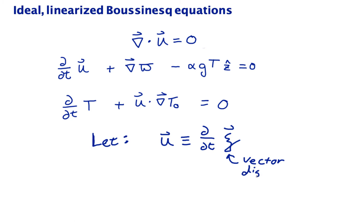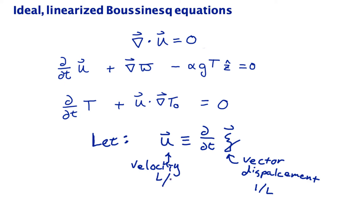Displacement means that it's a physical motion. Vector means that it is in a direction. This has units of length, and here's our velocity. Our velocity has units of length per time, like meters per second or centimeters per second. So the vector velocity is given by the time derivative of the vector displacement.